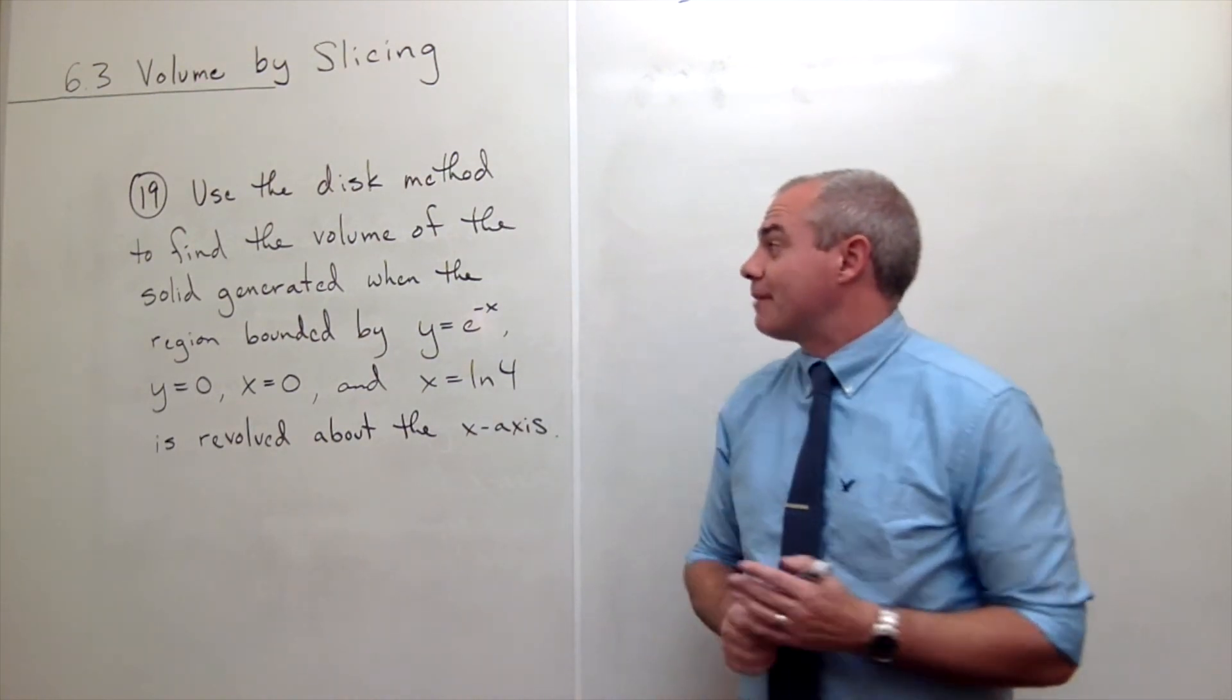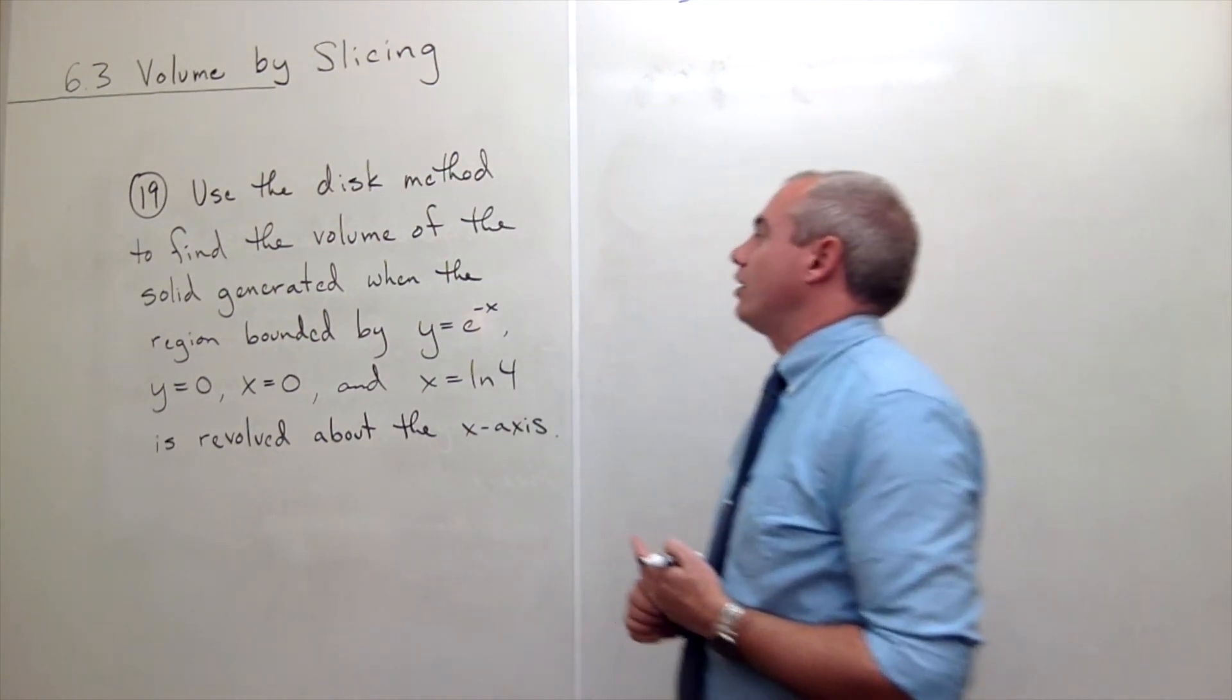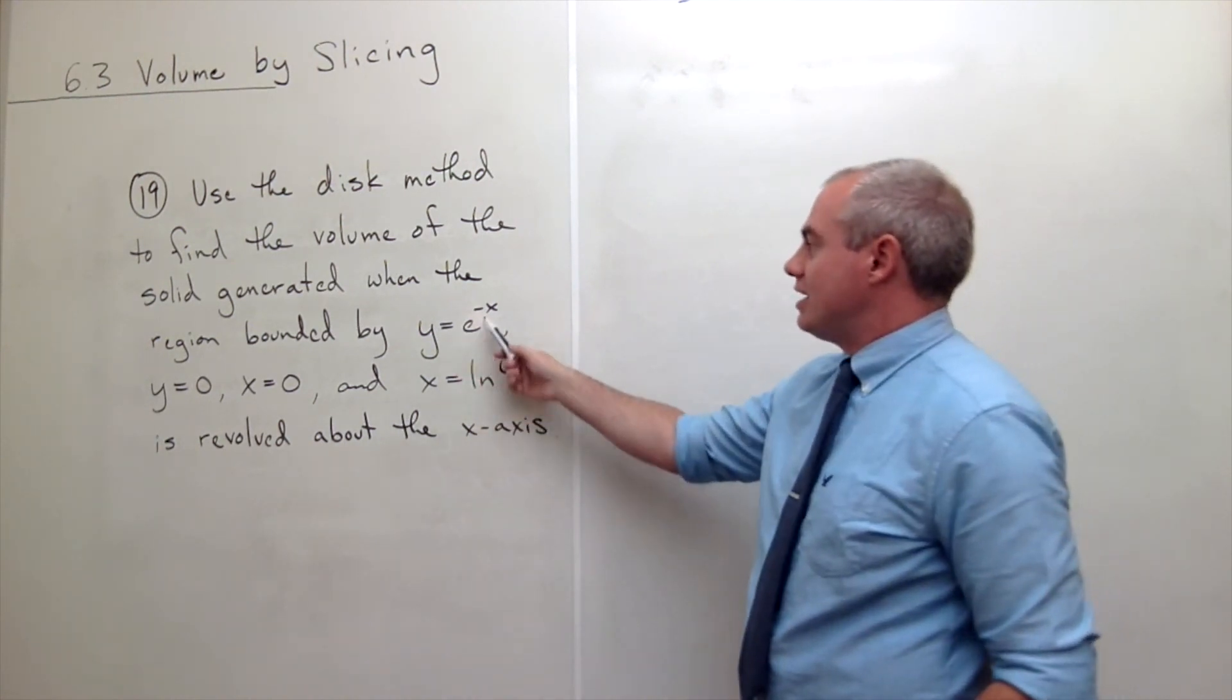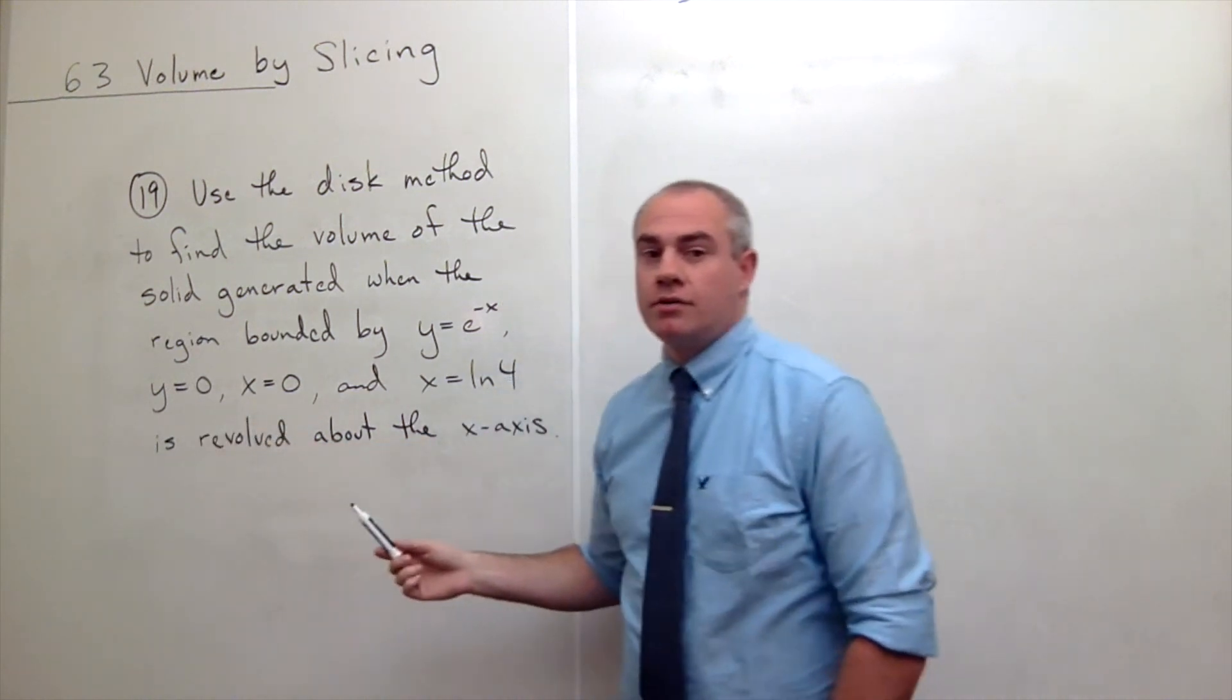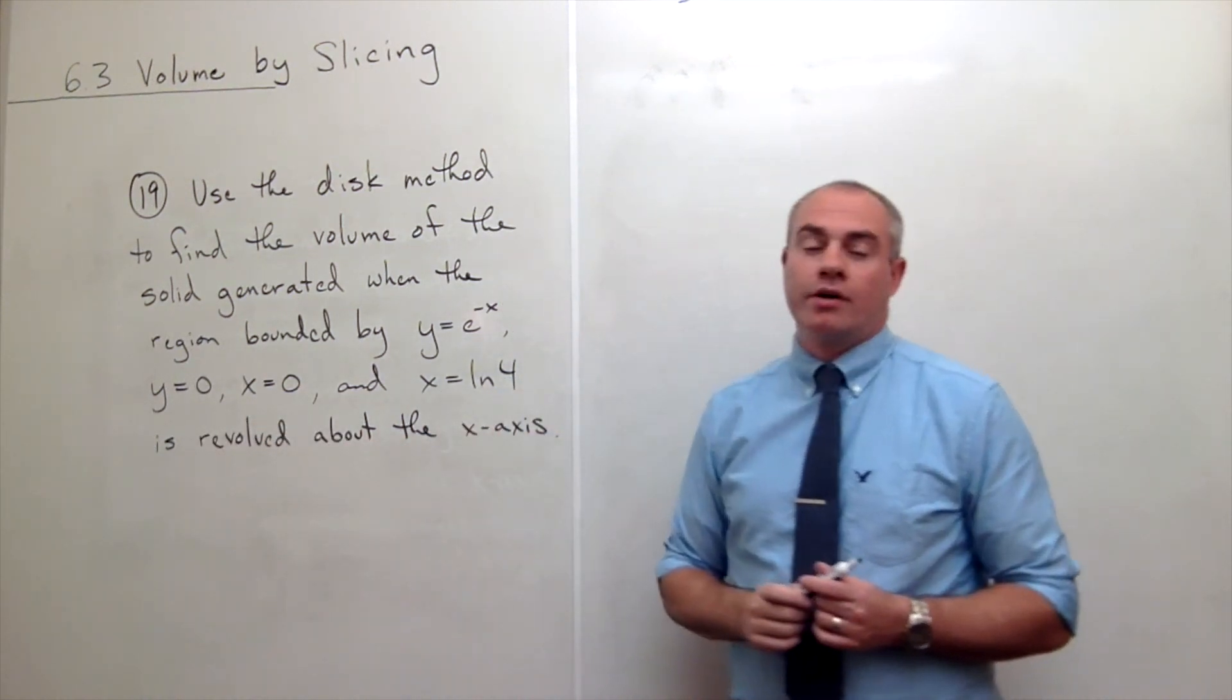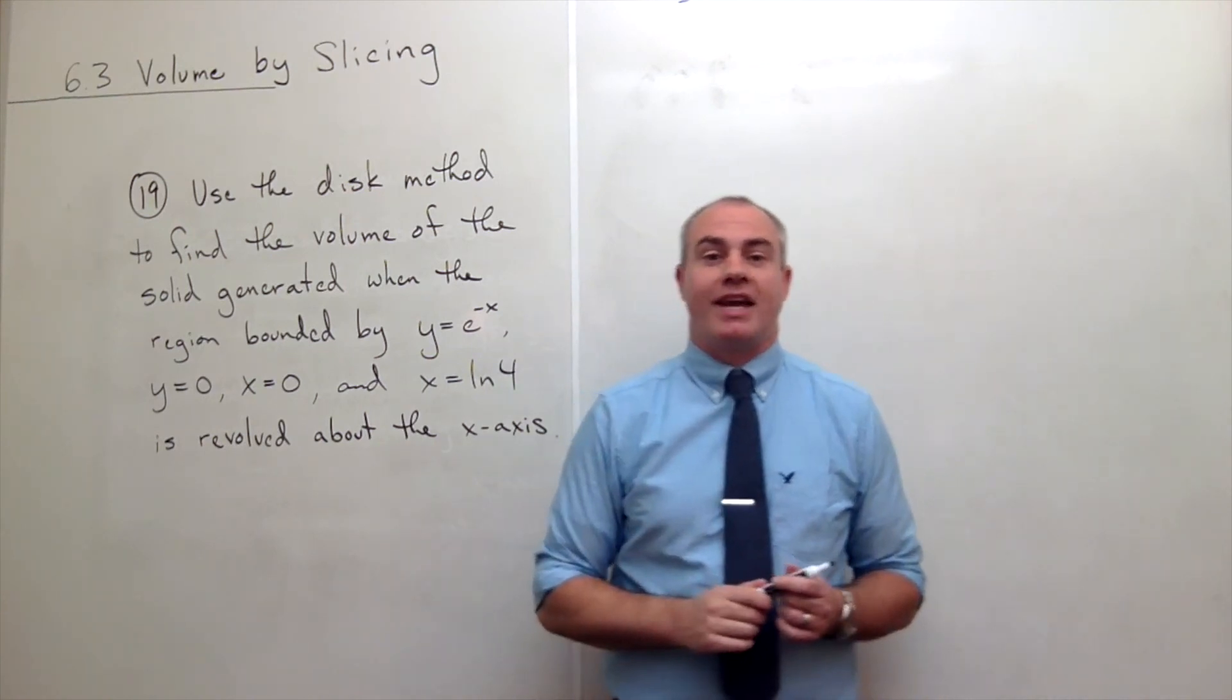we'd like to use the disk method to find the volume of the solid generated when the region bounded by y equals e to the negative x, y equals 0, x equals 0, and x equals ln of 4 is revolved about the x axis.